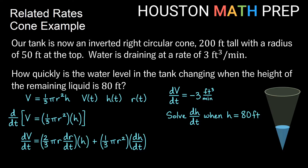Looking at what we have and don't have: we're solving for dh/dt so we don't plug in for that. We have dV/dt to plug in, and h is 80. However, we don't yet know what r is at that point in time, and we also don't know dr/dt. We can plug in dV/dt and h, but we'll have to do more exploring to find r and dr/dt.